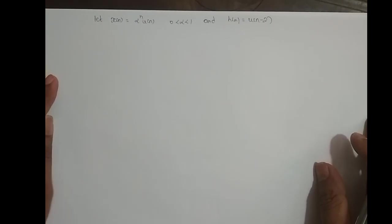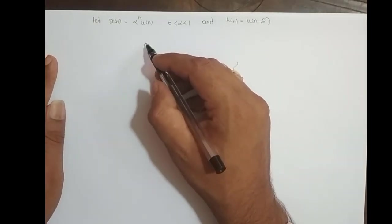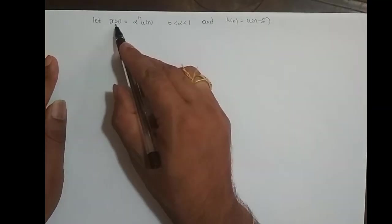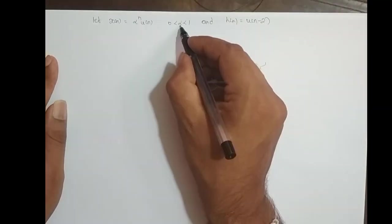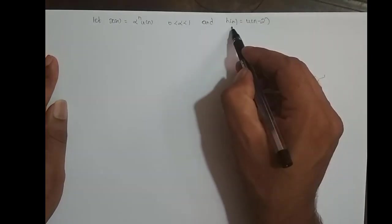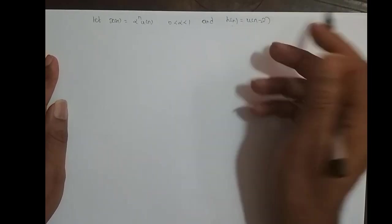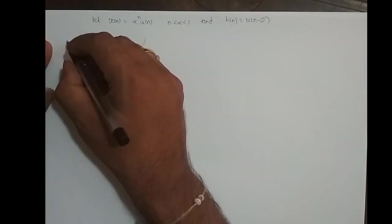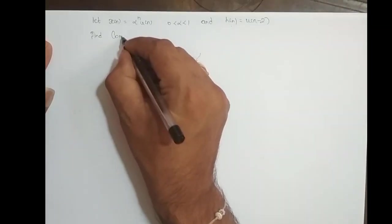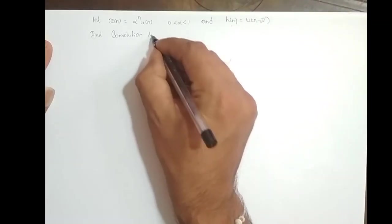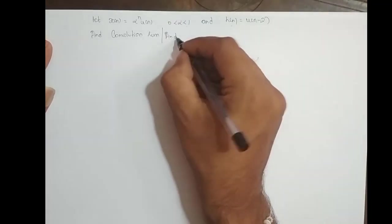Hi guys, in this video we will take up one more problem on convolution sum of an infinite line sequence. The input to the system is x(n) = α^n · u(n), where α is between 0 and 1, and the impulse response of the system is h(n) = u(n-2). We need to find the convolution sum, or find the output of an LTI system.